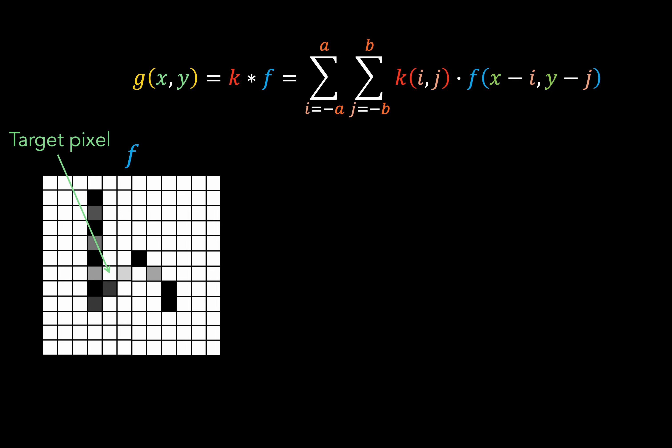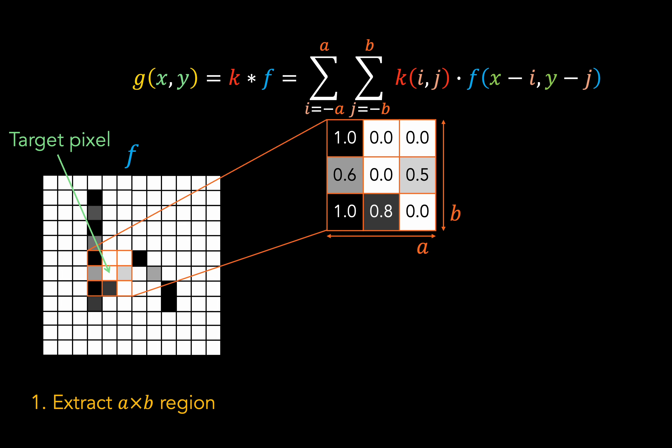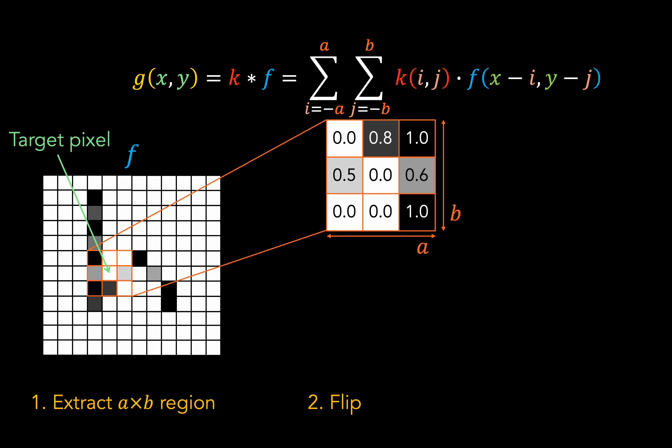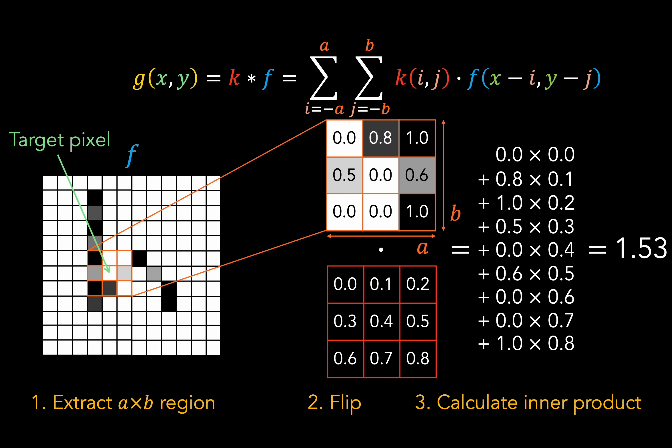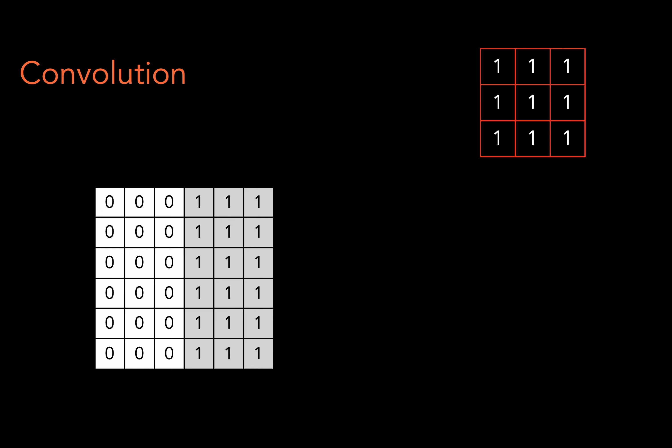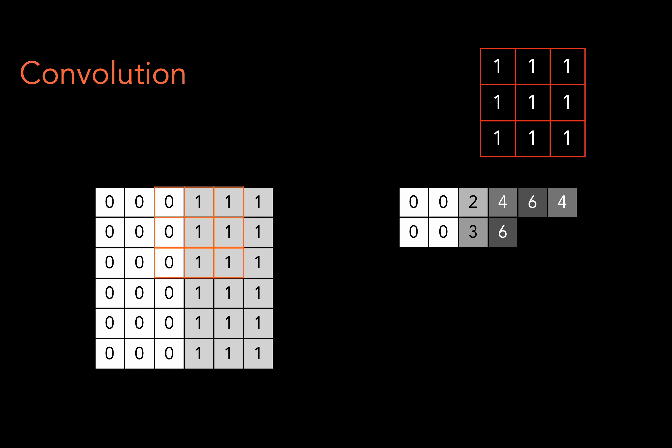First, we extract an a by b region around the pixel of interest. Then we flip that region horizontally and vertically. Then we take our kernel and calculate the inner product between the kernel and the flipped extracted region of the image. So we're basically finding a weighted sum of the image region pixels, and the weights are just the kernel values. Now I've described it this way, but actually it doesn't matter whether we're flipping the image region or the kernel. It just matters that one of them is flipped.